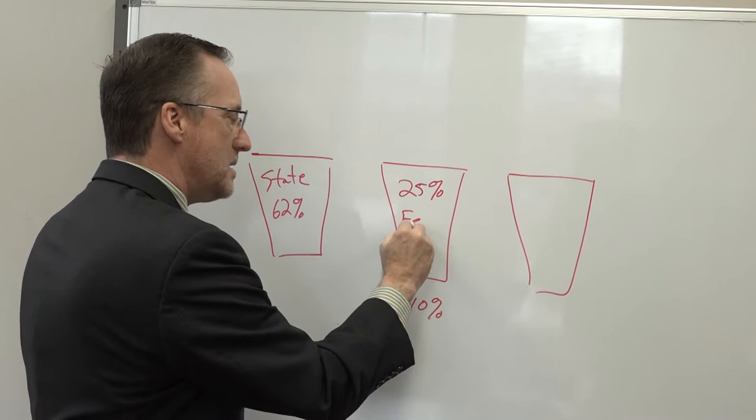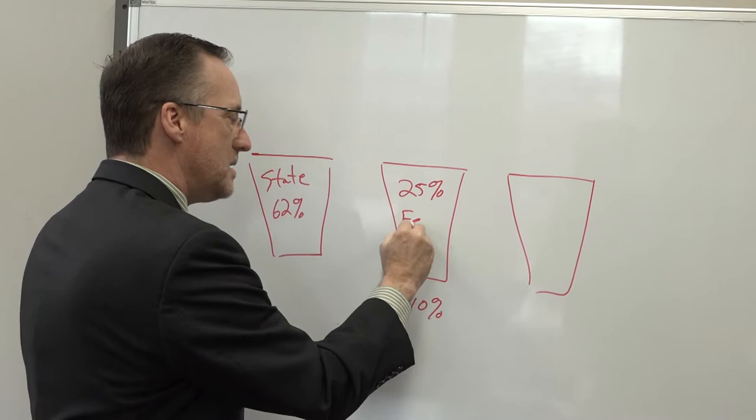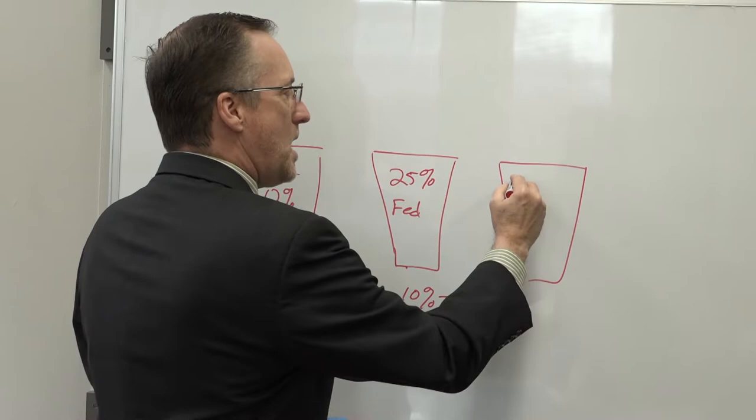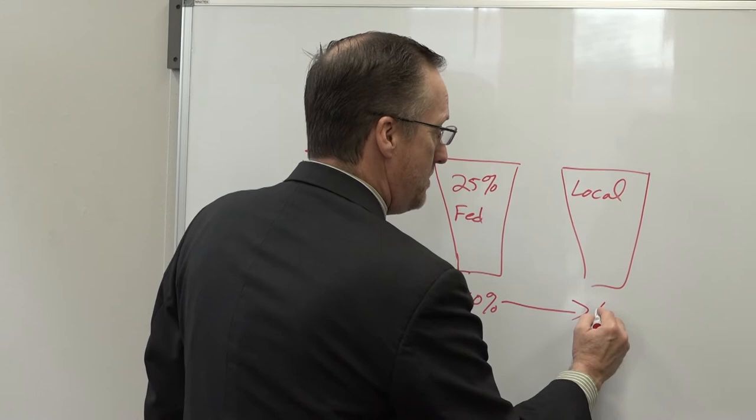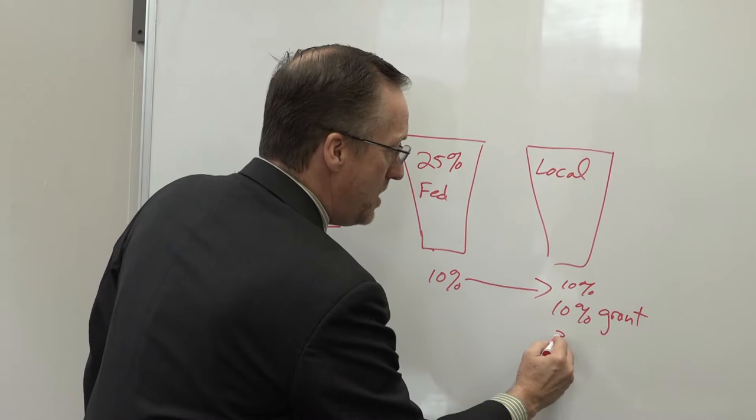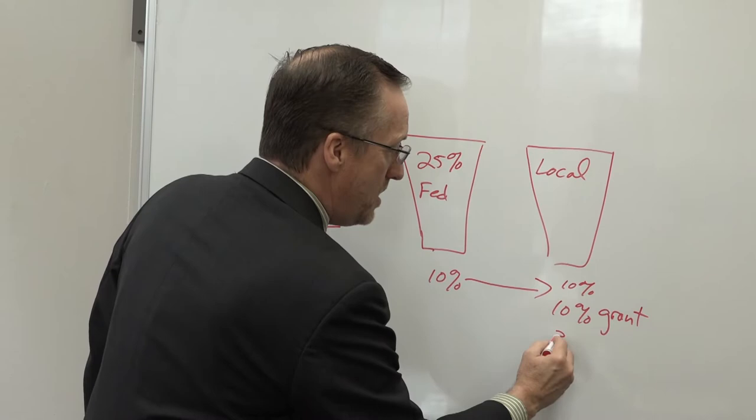About 10% of all of our federal money is coming out of impact, and then that is combined with our local allotment that includes grants, the county appropriation, and also that impact. So about 10% of our total budget is impact money, about 10% of that is grant money, and about 3% of our local funding comes from the county.